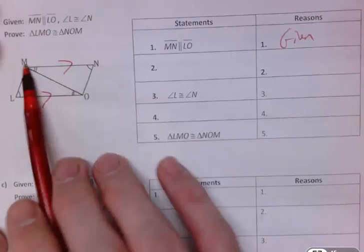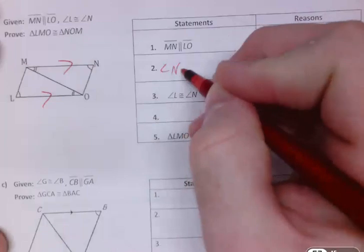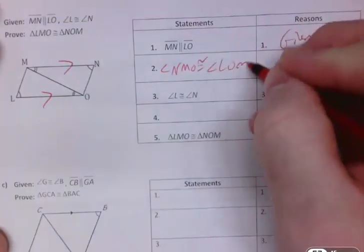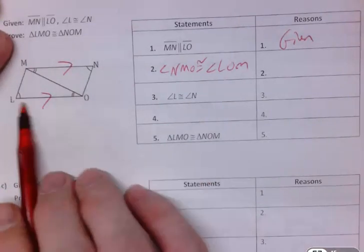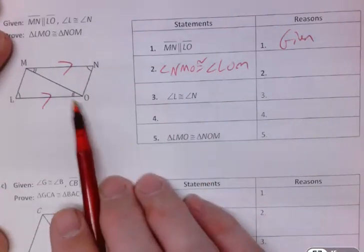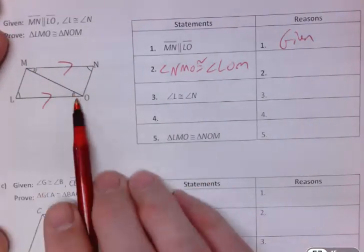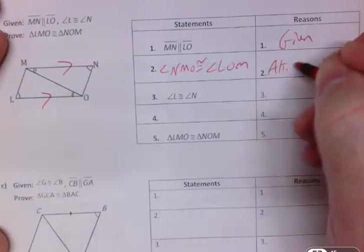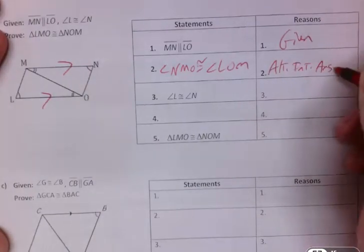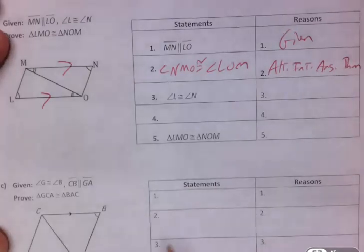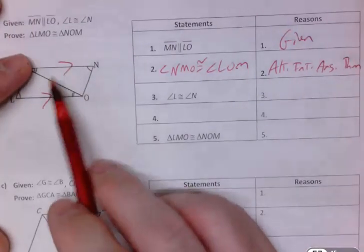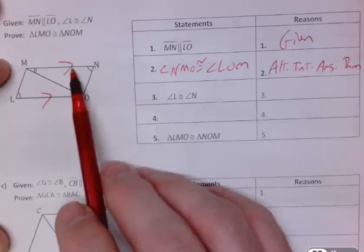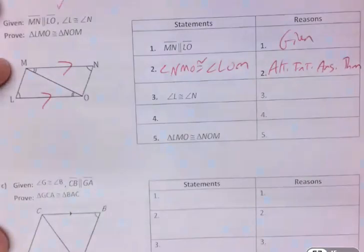Let's actually just write it down: angle NMO congruent to angle LOM. Why would those two have to be congruent knowing that you have these parallel lines? Well, hopefully you can see those are actually alternate interior. And if you've got parallel lines, then alternate interior angles must be congruent. That's the alternate interior angles theorem. Now, hopefully if those marks weren't there, you'd still be able to tell, but you wouldn't be able to tell necessarily if you didn't realize these lines were parallel.